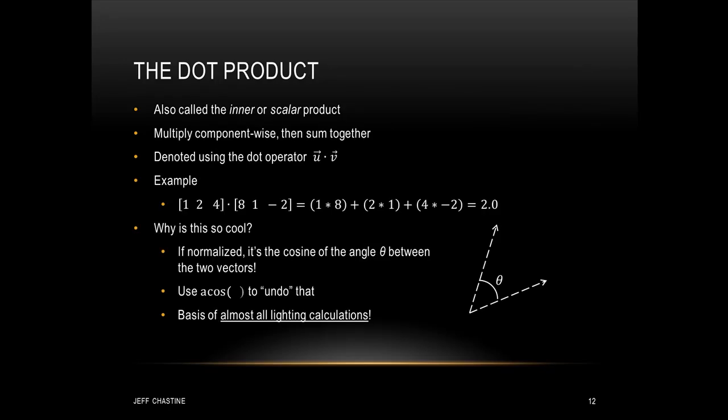Now let's look at the dot product, also called the inner product or scalar product. To compute it, we multiply component-wise and then sum those results together. Written mathematically, we use a dot operator. For example, the dot product of (1, 2, 4) and (8, 1, -2) is computed as 1×8 + 2×1 + 4×(-2), which gives us the value 2.